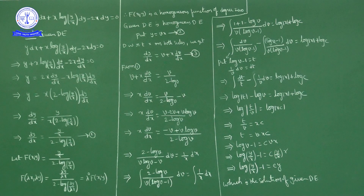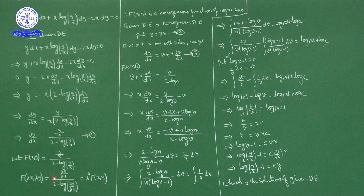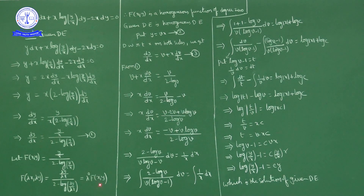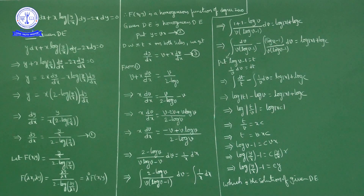f(x, y) is (y/x) upon (2 minus log(y/x)). Now f(λx, λy) equals (λy)/(λx) upon (2 minus log(λy/λx)). Here lambda cancels in both numerator and denominator, giving f(x, y) only — nothing but λ^0 times f(x, y). So f(x, y) is a homogeneous function of degree 0, and the given differential equation is a homogeneous differential equation.